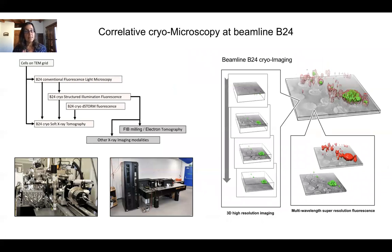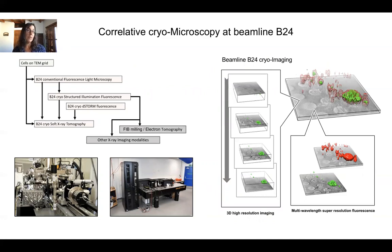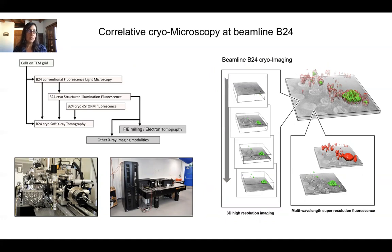Our samples are cells or biological material on EM grids — flat gold three-millimeter wafers where we grow cells on. They usually have a carbon film to provide support. We can add samples which can be cells, bacteria, archaea, virus-infected cells, cancer cells, and the like, or we can simply deposit them on these grids.